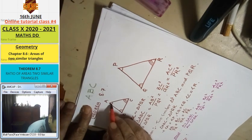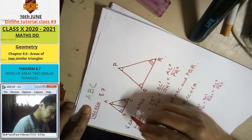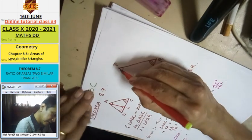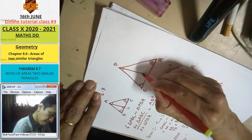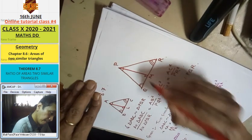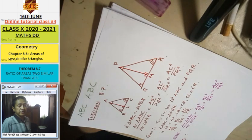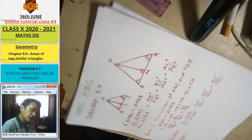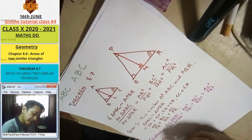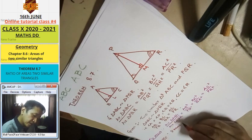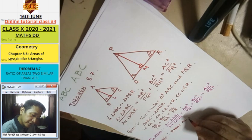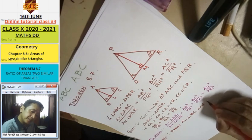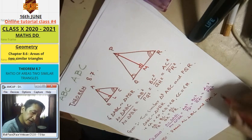Draw AL perpendicular to BC, and PM perpendicular to QR.